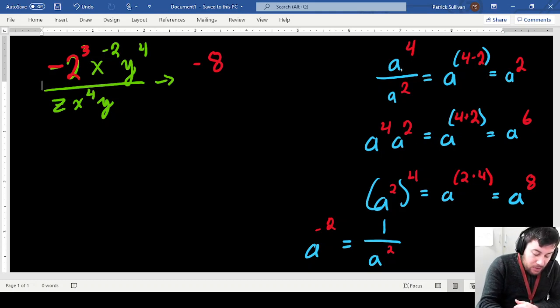We're actually going to use our quotient rule, where we take, when we're dividing by the same base, which in this case is x, we subtract our exponents.